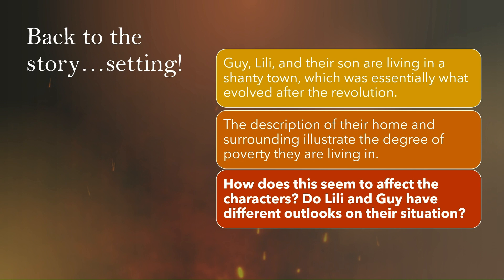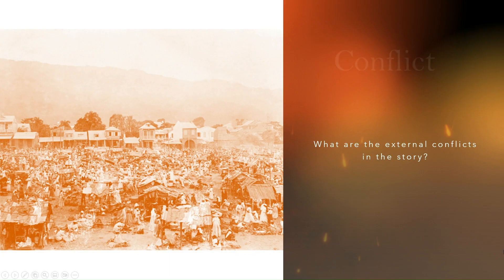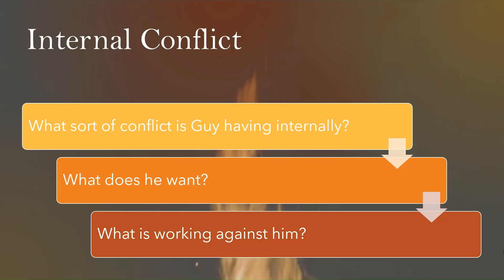The description of their home illustrates the extreme poverty they're living in. You want to think about how this affects the characters and whether Lily and Guy have different outlooks on their situation. The external conflicts in the story are this level of destitution. There's not a lot for Guy to do to get out of it — the jobs are controlled by the sugar mill, and there's little he can do to change his family's circumstances. These are circumstances beyond his control.